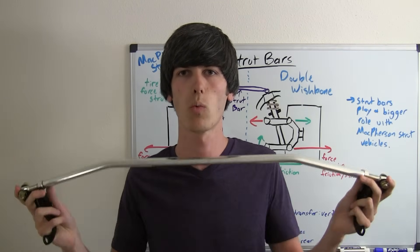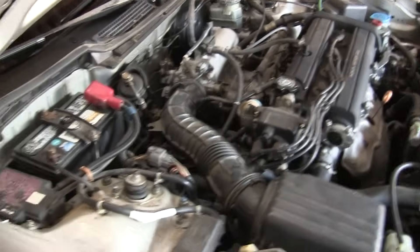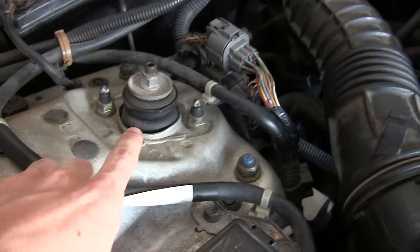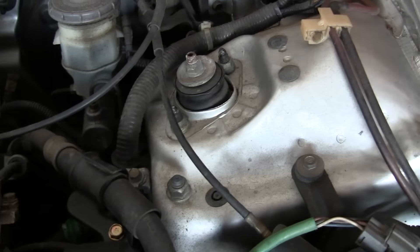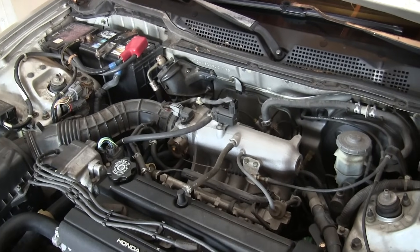So let's take a look at first of all where these would be installed. Here we have the engine bay and if you just follow the tires directly up you can get to your strut towers. There's the front right strut tower and here is the front left strut tower. What we're essentially going to do is connect those two.